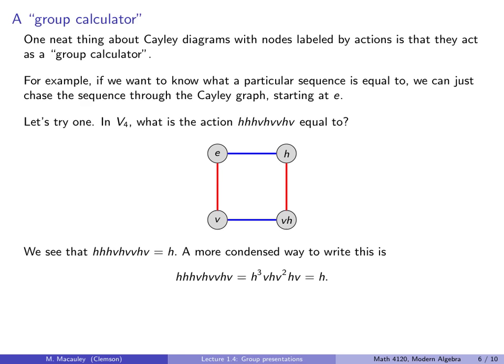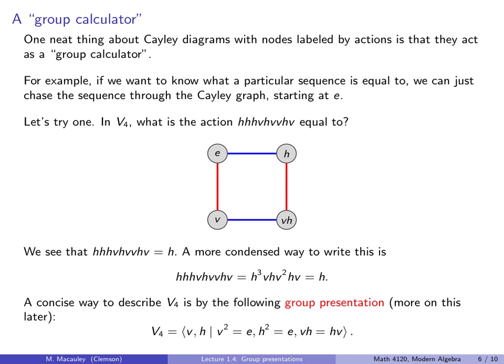A concise way to describe V4 is by the following group presentation. V4 is generated by V and H, two actions, subject to the following relations. V squared is equal to the identity. Well, that makes sense. H squared is the identity. And VH equals HV.